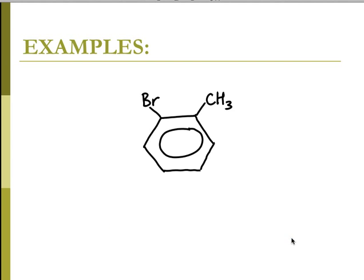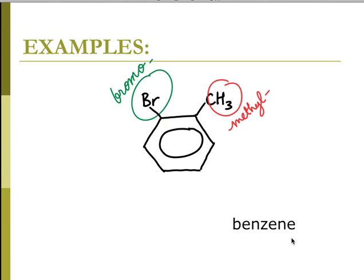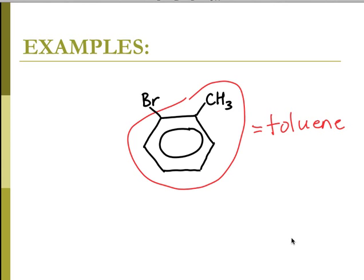Here I have a bromo group and a methyl group on benzene. Because of alphabetizing, it is 1-bromo-2-methylbenzene. Or, this is toluene, so you can name it 2-bromotoluene. Either one is fine.